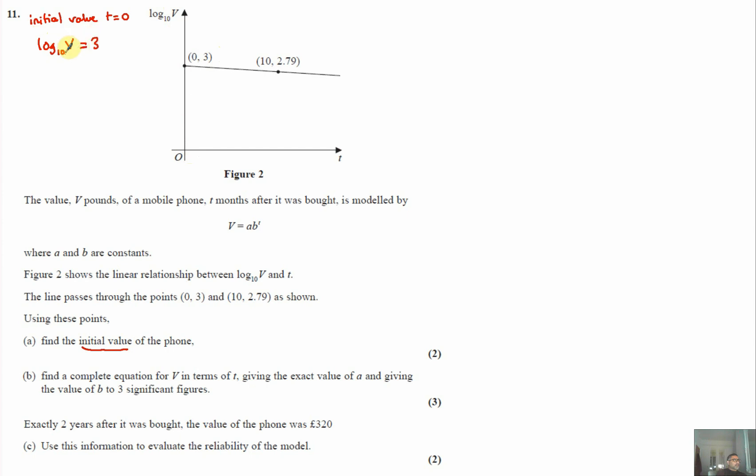And from here we can see that when t is zero, log to base 10 V is three. Using our understanding of logs, that means 10 to the power of 3 is going to give us our value for V. So V is 10 to the power of 3, so the initial value is 1000 pounds according to this model. And that's part a done.